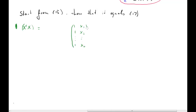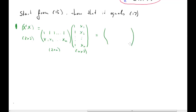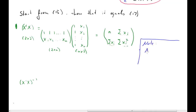We need X'X in our (X'X) inverse X'Y formula. Writing out X' and X and doing the multiplication, we end up with a 2-by-2 matrix. The first diagonal element is 1+1+...+1 = n. The off-diagonal elements are the sum of x_i's, and the second diagonal element is x_1 squared plus x_2 squared up to x_n squared — that is, the sum of x_i squared.